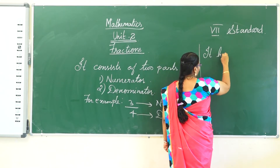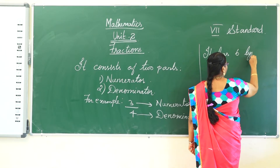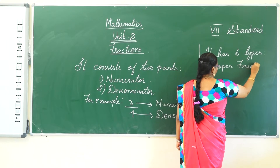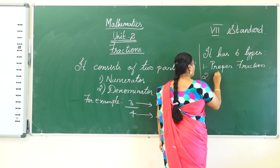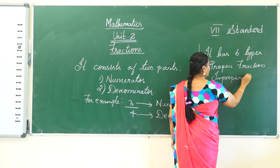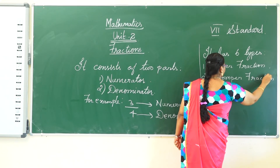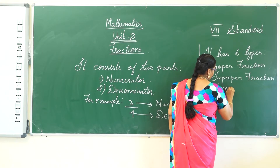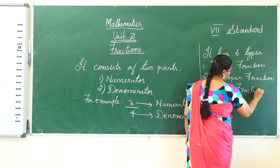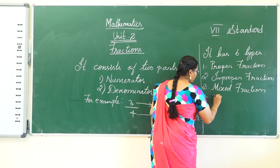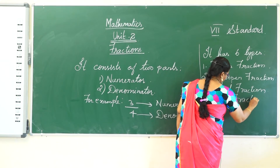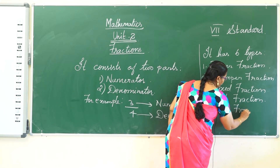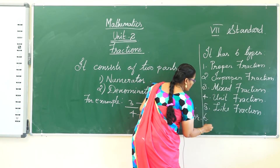The first one is proper fraction, the second one is improper fraction, the third one is mixed fraction, the fourth one is unit fraction, the fifth one is like fraction, and the sixth one is unlike fraction.